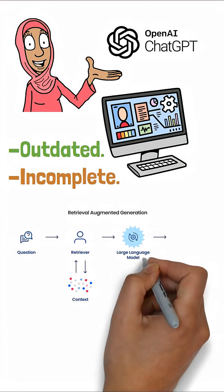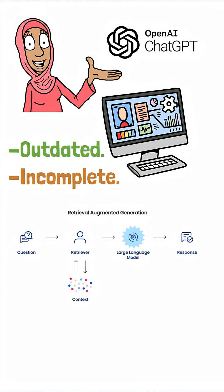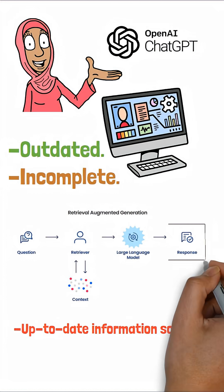RAG supercharges these models by connecting them to your specific, up-to-date information sources before generating a response.